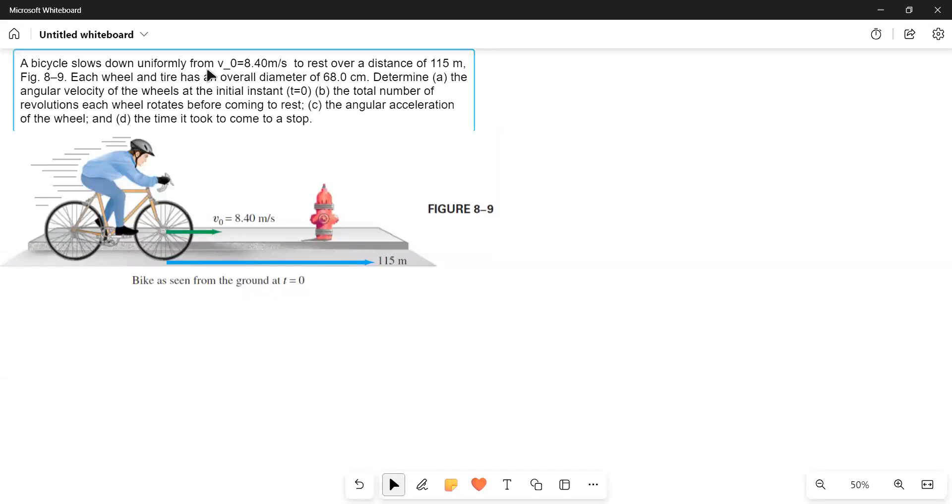A bicycle slows down uniformly from V₀ = 8.4 m/s to rest over a distance of 115 m. Each wheel and tire has an overall diameter of 68 cm.